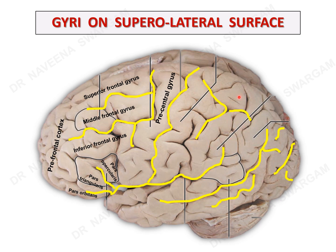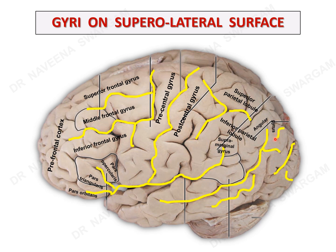Gyri on the parietal lobe: the post-central gyrus lies between the central and post-central sulci. The rest of the parietal lobe is divided into superior and inferior parietal lobules by the intraparietal sulcus. The part of the parietal lobe surrounding the tip of the posterior ramus of the lateral sulcus is known as the supramarginal gyrus, and the part surrounding the tip of the superior temporal sulcus is known as the angular gyrus. Gyri on the temporal lobe are the superior, middle, and inferior temporal gyri, separated by the superior and inferior temporal sulci.